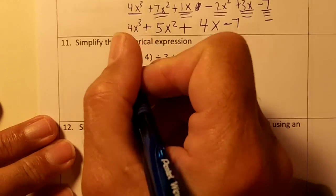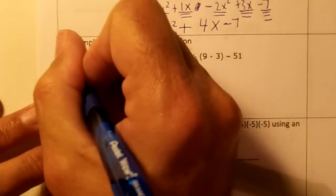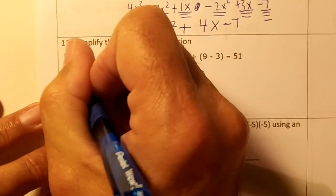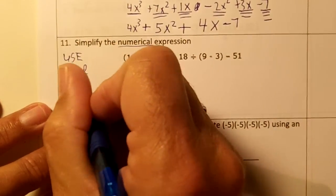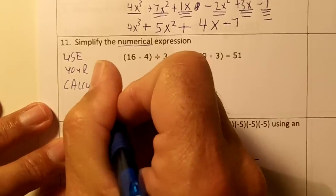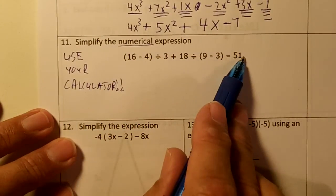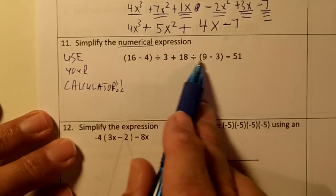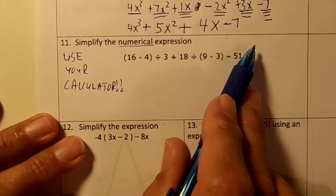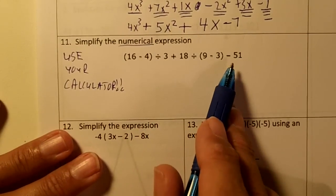Number 11. Simplify the numerical expression. Use your calculator. Keystroke this exactly as is into your calculator and you'll get the right answer. We're going to use the order of operations since I'm doing it by hand.